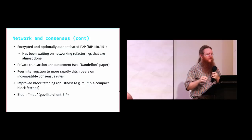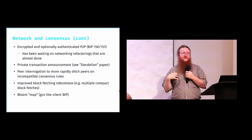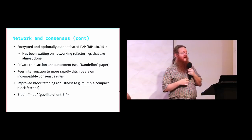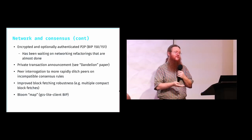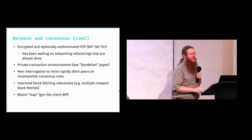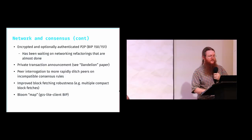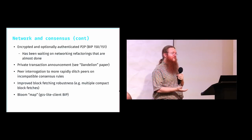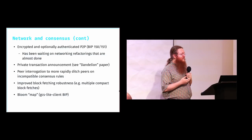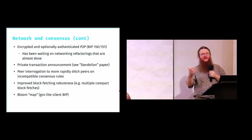Work has started on peer interrogation to more rapidly identify peers on different consensus rules. If I receive an invalid block from one peer, I can ask all my other peers whether they have that block — and anyone who says yes is obviously on different consensus rules, so I can disconnect them. There are a number of techniques being developed to make the network more robust against altcoins running on the same peer-to-peer port. It's mostly robust already since we have to tolerate actual attackers, but it's unfortunate when honest users start up software that makes them inadvertently attack other nodes.